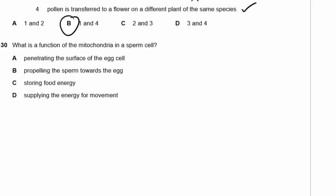Question 30: What is the function of mitochondria in a sperm cell? Sperm cells have lots of mitochondria that produce energy. It's not to penetrate the egg — that's the enzymes at the head. The flagellum propels the sperm. Mitochondria supply the energy for movement. The answer is D.